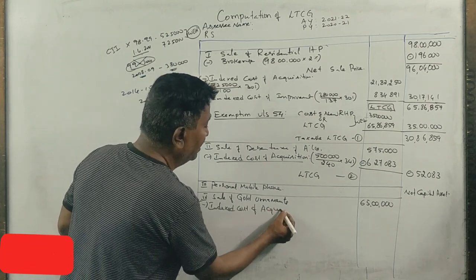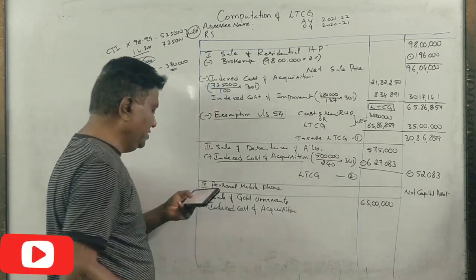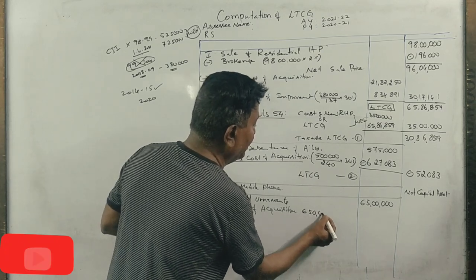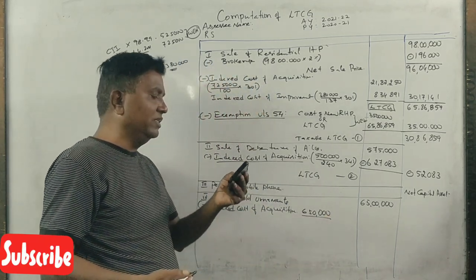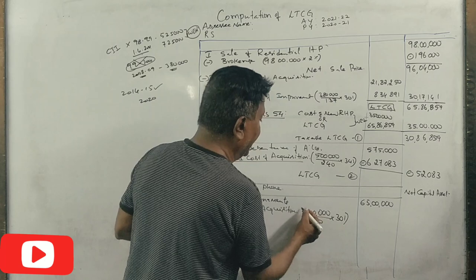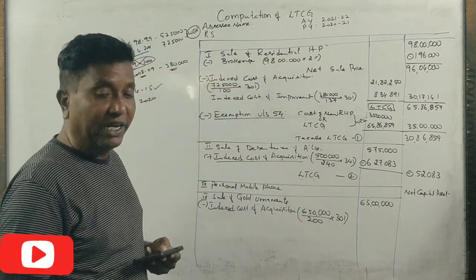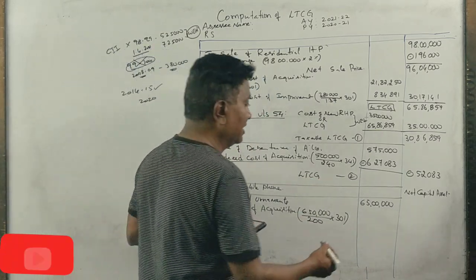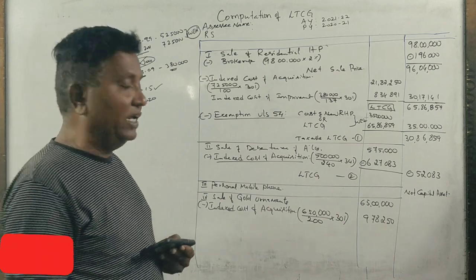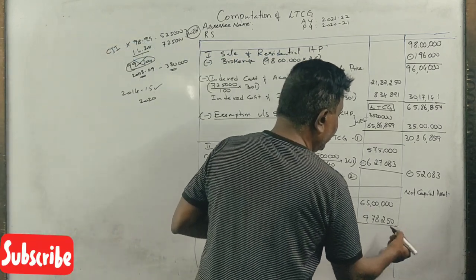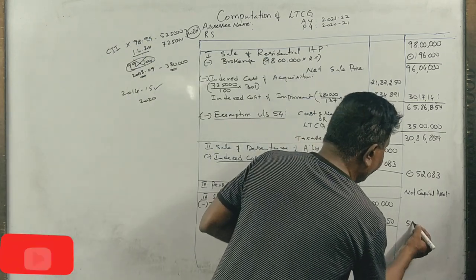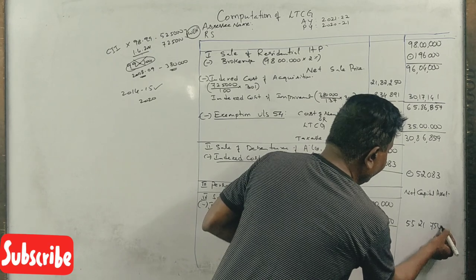Purchase money is from 2012-13 at Rs 6,50,000. Cost of inflation index for 2012-13 is 200, and for 2021-22 is 301. Indexed cost of acquisition is Rs 9,78,250. Long term capital gain is Rs 55,21,750.